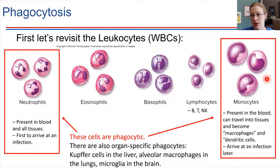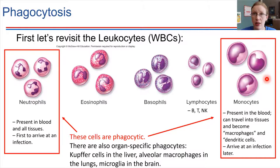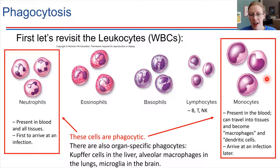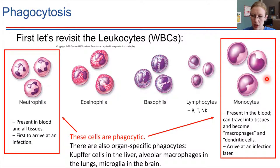Certain organs in the body have phagocytic cells that are just kind of built in, sort of locked in place. Some examples of that: the liver particularly has to process a lot of pathogens, and so it has its own special phagocytic cells called Kupfer cells. These are phagocytic cells that really help to purify the blood from pathogens. After a couple passes through the liver and the spleen, blood is quite clean in most cases.